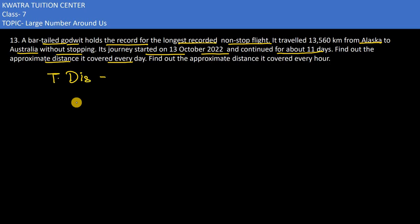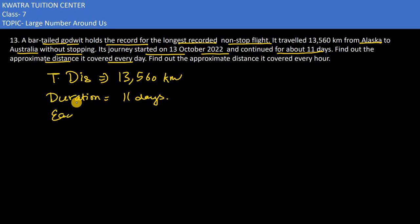So the total distance is given as 13,560 km. What is the duration here? The duration is 11 days. Each day is 24 hours. So the duration in hours — how many hours do we have?